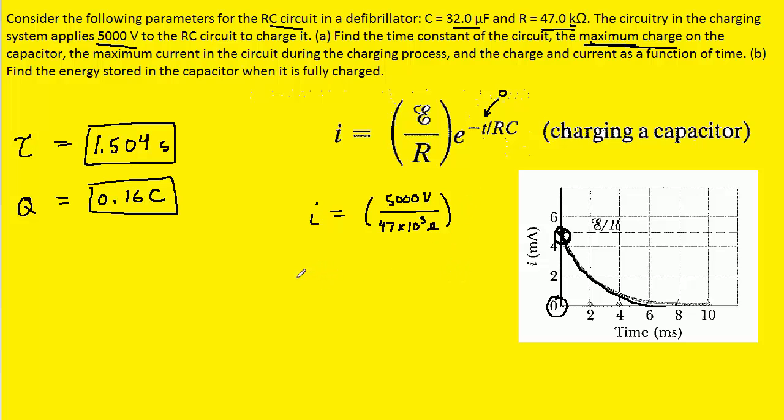So, the maximum current can now be calculated. And since it's the maximum, they will often change the lowercase i to an uppercase I. And then, we can divide out the potential difference and the resistance. And when we do that, we get 0.106 amps. So, this would be the maximum current that will flow through the circuit. And again, that happens at time zero.